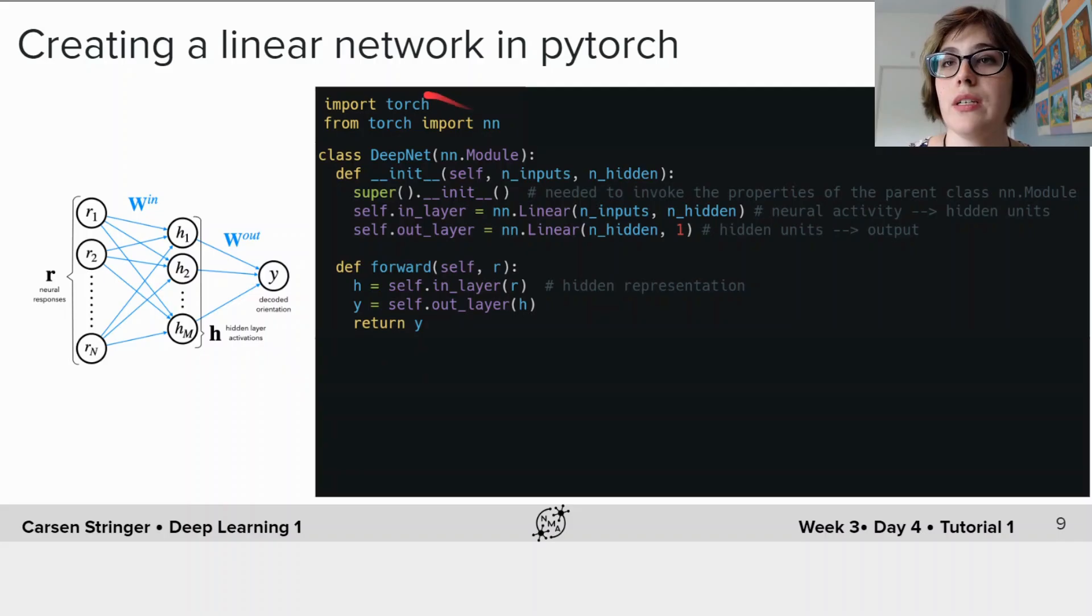And now that we've declared our class let's create an instantiation of this class called net and we're going to give it the number of inputs we have which is the number of neurons and then also the number of hidden units which is 200.